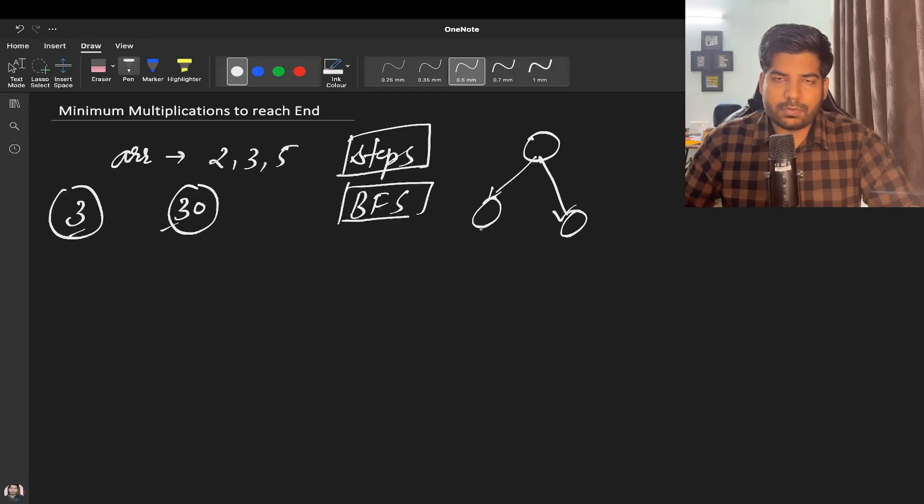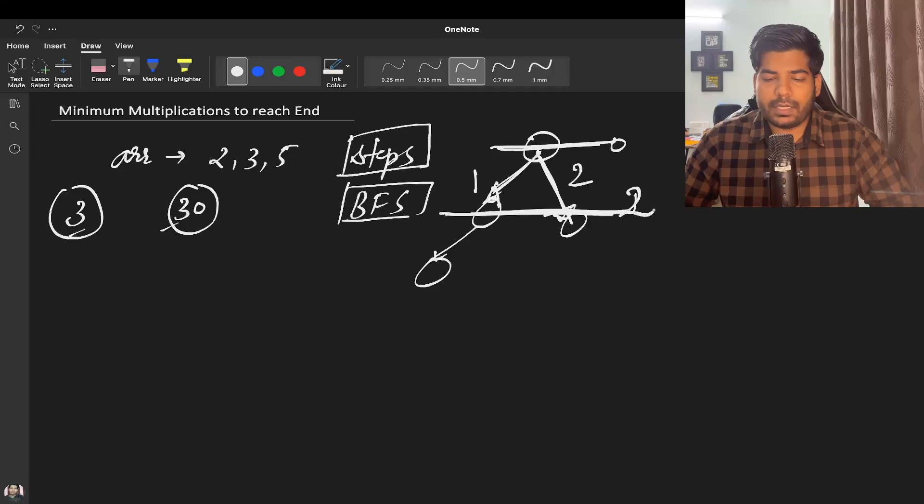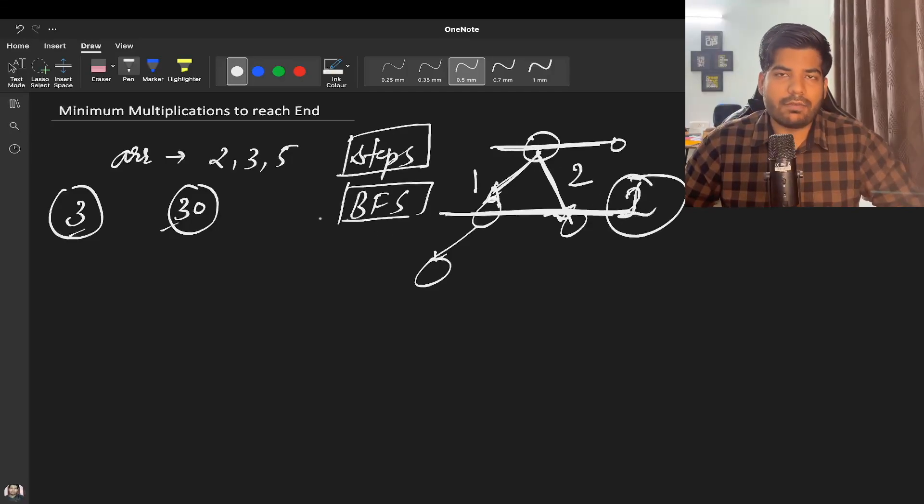When you are at this level, your number of steps will be zero. At this level, the number of steps will be one for every node at this level. But if we were doing DFS, you might take one step here, one step back, then one step here. So number of steps becomes two. But if we do BFS, for the same level, the number of steps is minimized. So basically, we have to minimize the number of steps, so we will be using BFS algorithm.